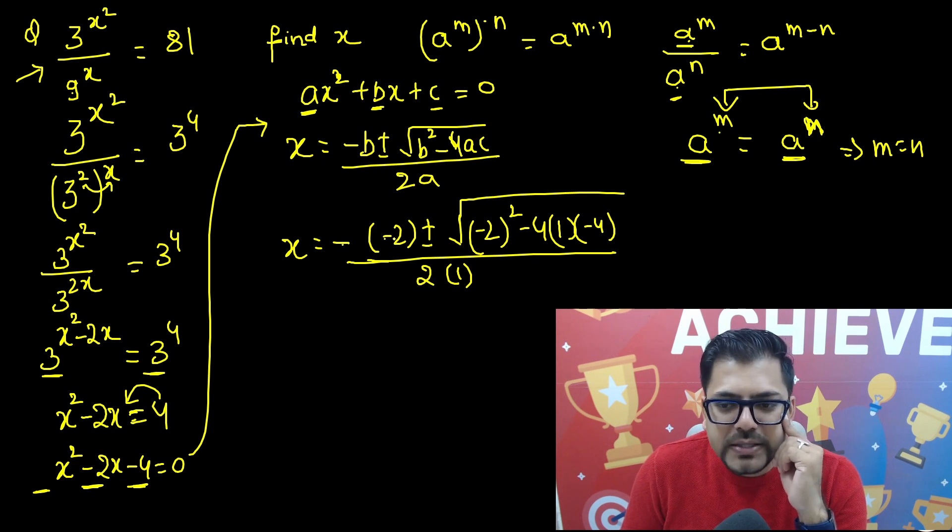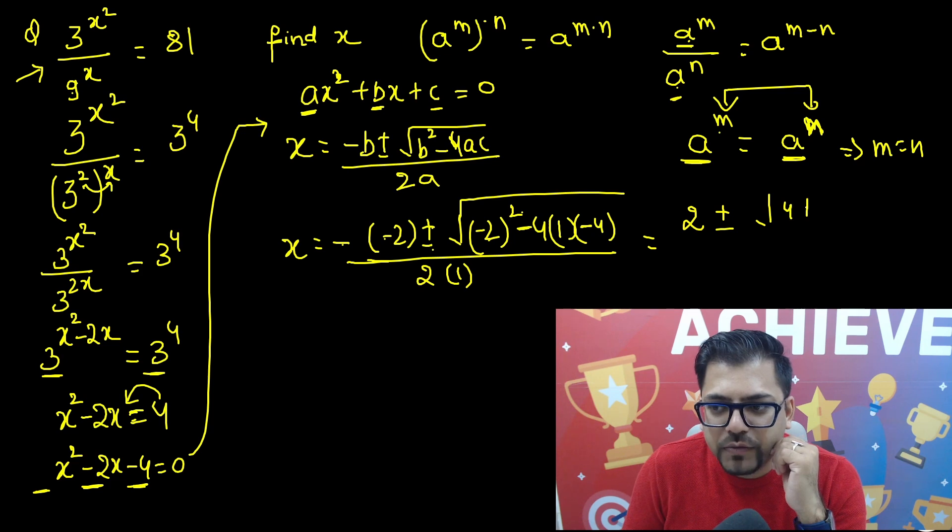Cool. Now, so minus and minus, we have got a 2. Plus minus, it will be plus minus. Root over, minus 2 squared will be 4 and you have a minus here and you have a minus here. So that will be plus. So you have a 4 plus 4, 4s are 16. So 16 and whole divided by again 2.